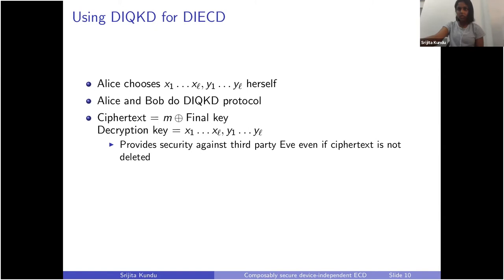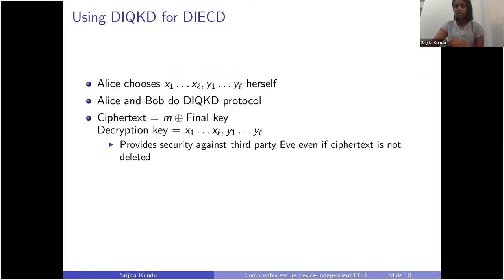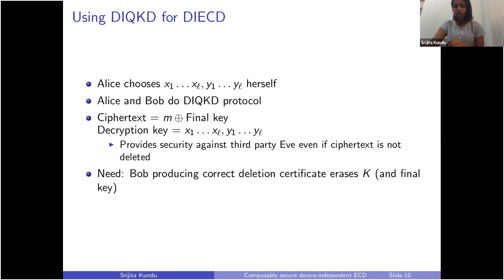Because this is based on DI-QKD, this provides security against the third-party eavesdropper, even if the ciphertext is not deleted. As I mentioned, Alice may or may not want Bob to delete the ciphertext. In our scenario, if she doesn't want Bob to delete the ciphertext, then even when the key is revealed and Bob hasn't deleted it, the message is secured against a third party. This is not a property that the Broadbent and Islam protocol had.